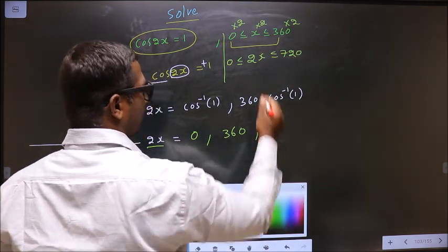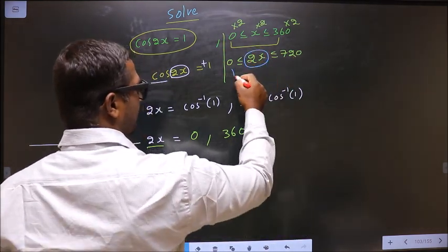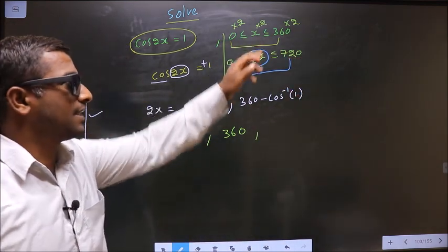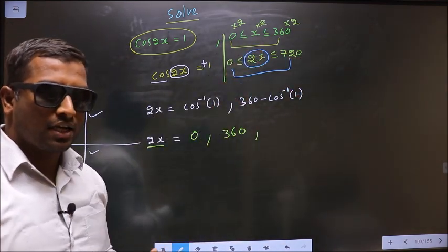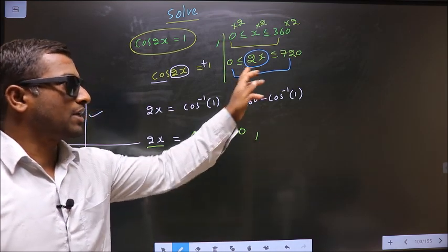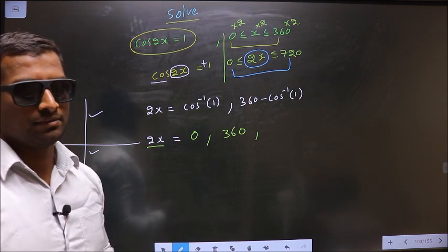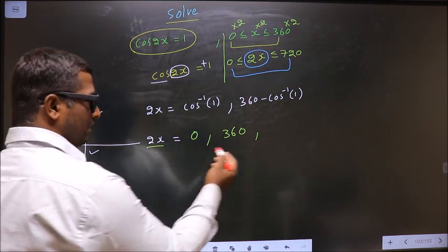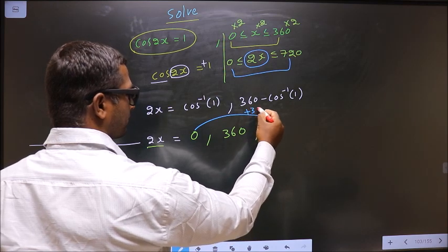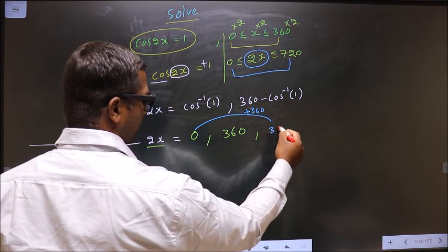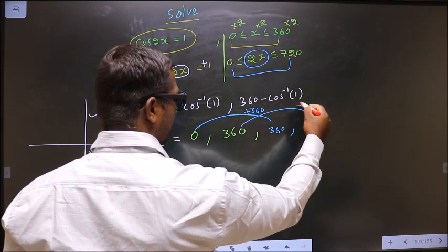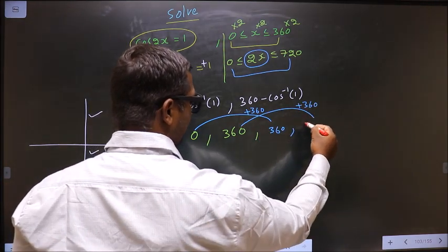Now when 2x lies in this interval, automatically x will lie in this interval. So now I should write all the angles for 2x in this interval. Now to get another angle I should add 360 to this. So I get 360. To get another angle I should add 360 to this one. I get 720.